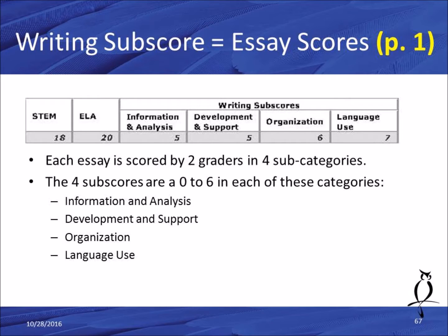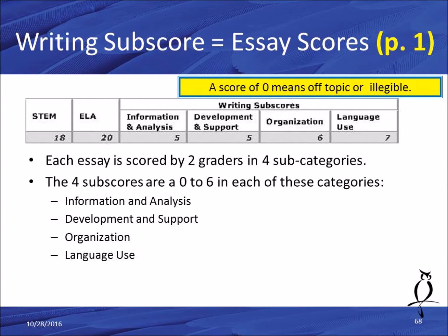Now let's go back to page one and look at the writing subscore — your essay score. This was on the very top of the first page under subscores for STEM, ELA, and writing. Each essay is scored by two graders in four subcategories, each scored zero to six. The four categories are: information and analysis, development and support, organization, and language use. You have a maximum of 24 possible points combining those four sections. Each essay is scored by two graders, giving you a score of two to 12 in each subsection.